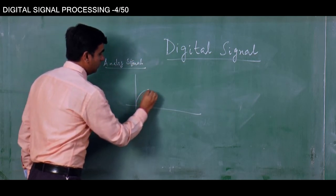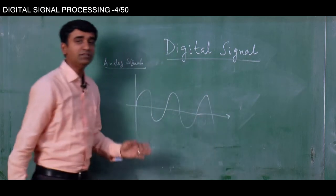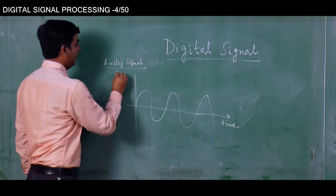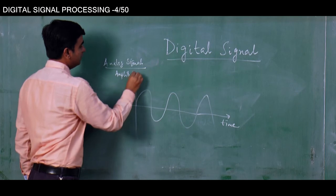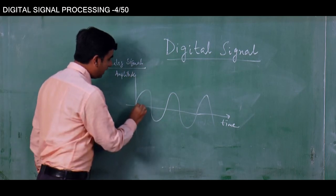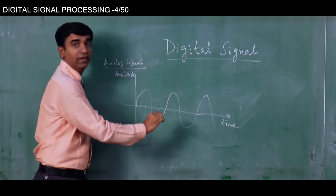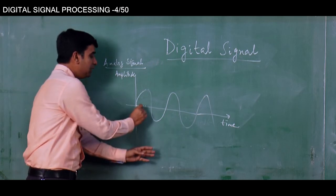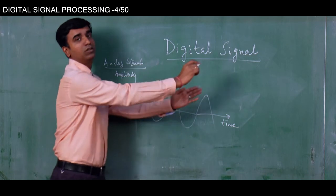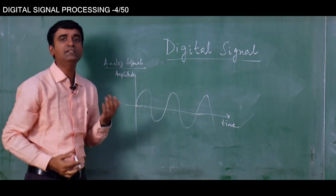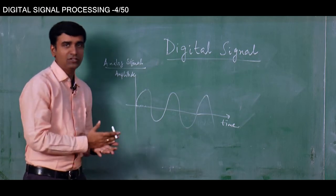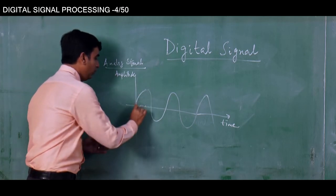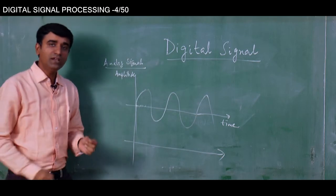We have discussed that analog signals are continuous time signals. This is the time axis and this is the amplitude axis, and here at each and every point of time it has got some value or the other. An analog signal is a continuous time signal where at each point of time it has got some value, whereas a digital signal is a discrete time signal which has got values at discrete instances of time.